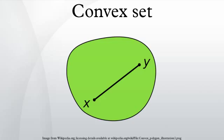For example, a solid cube is convex, but anything that is hollow or has a dent in it is not convex.